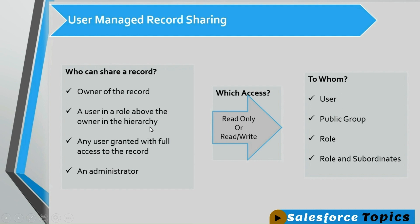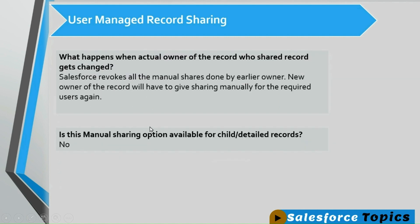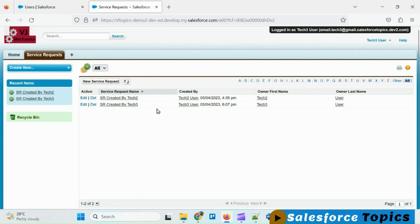Now let's consider a scenario where the owner of the record has manually shared his record to another user, and then the owner of the record is changed. What happens to those manually shared record accesses? In this case, Salesforce revokes all manual shares done by the earlier owner. The new owner will have to give sharing manually for the required users again. For example, tech 3 is currently able to see tech 2's record because he has read-only access granted by tech 2.